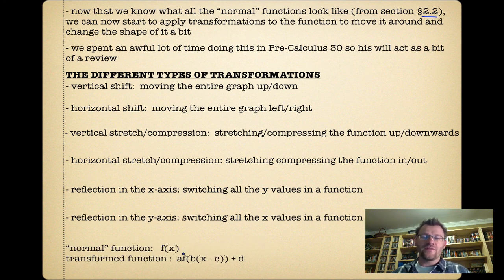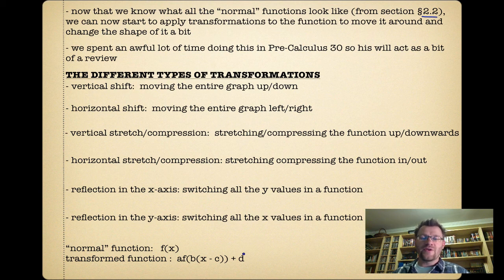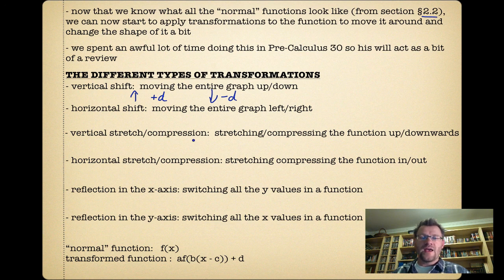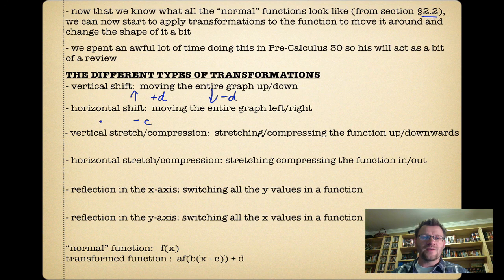A normal function is f(x). The transformed function is a times f(b(x - c)) + d. The vertical shift is the letter d: if you move the function up, d is positive; if you're moving down, d is negative. Horizontal shift is the letter c: if it's a negative c inside the brackets, we're moving to the right; if we're moving left, that gives you a positive c inside the brackets.